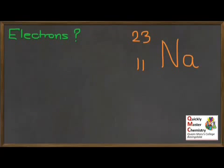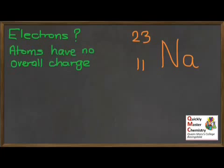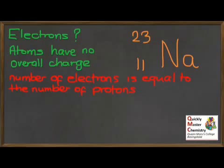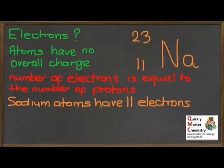That leaves electrons to talk about. How do we know the number of electrons in an atom? We know because atoms have no overall charge, and this means that the number of electrons with their 1-minus charge must equal the number of protons with their 1-plus charge. So the number of electrons in an atom is equal to the number of protons. Since the number of protons came from the atomic number, the number of electrons is also given by the atomic number. So sodium atoms with their 11 protons also have 11 electrons.